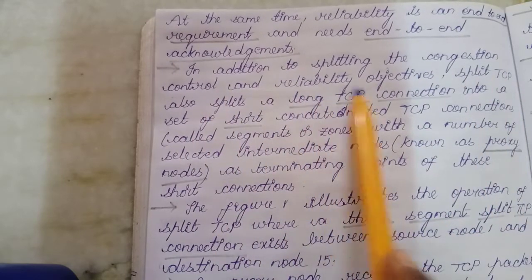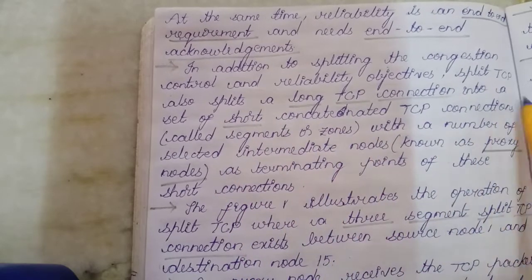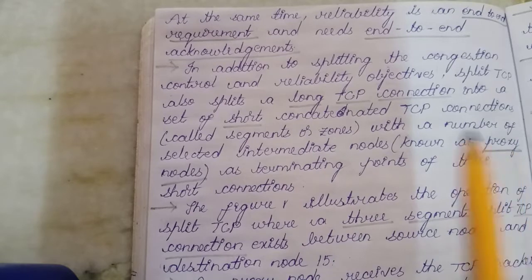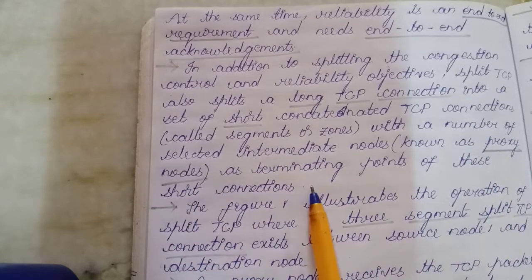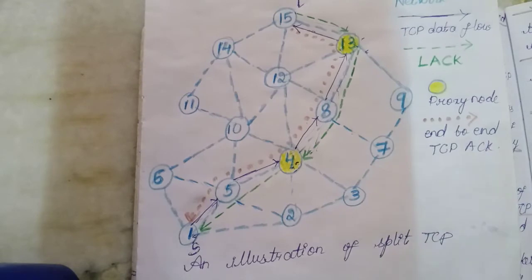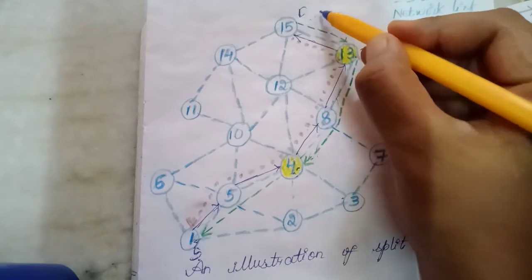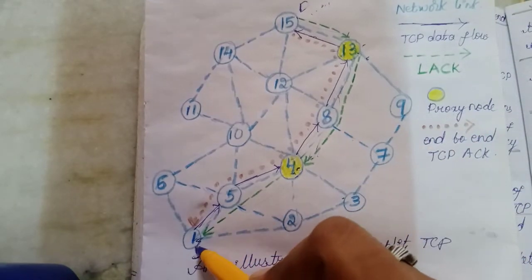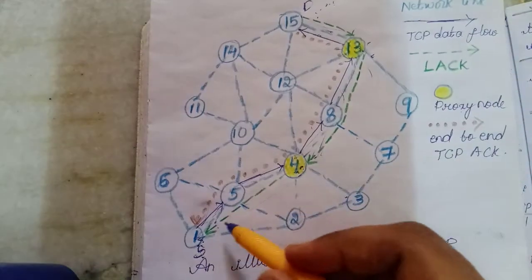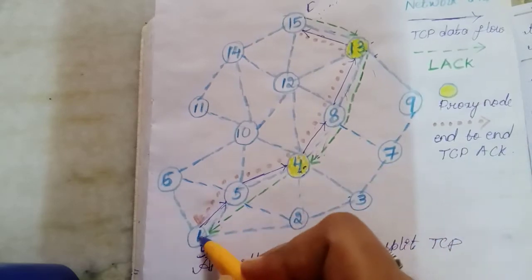In addition to splitting the congestion control and reliability objectives, Split TCP also splits a long TCP connection into a set of short concatenated TCP connections called segments or zones, with a number of selected intermediate nodes known as proxy nodes as the terminating points of these short connections. For example, consider a network where node 1 is the source node and node 15 is the destination node. If the source node needs to send data packets to the destination node via this long path, the long path length is divided into fewer short path lengths.